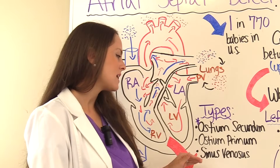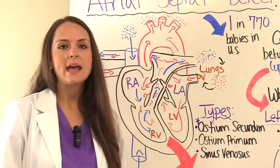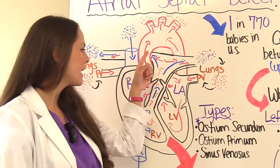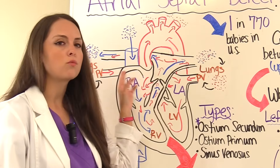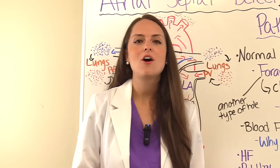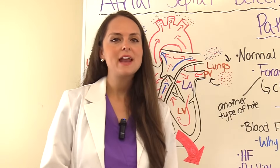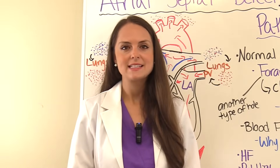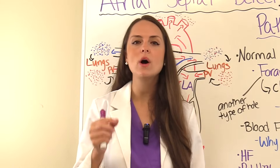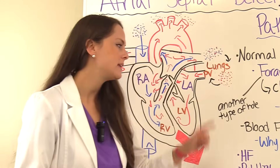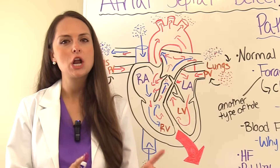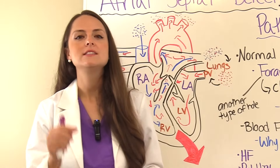Another type is called sinus venosus, and these holes are found close to the superior vena cava and the right atrium. Now let's go over the pathophysiology of an atrial septal defect. To truly understand what is going on with the blood flow in an ASD, we first have to understand normal heart blood flow.